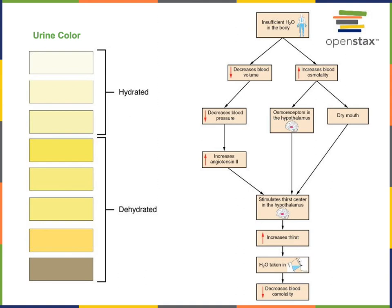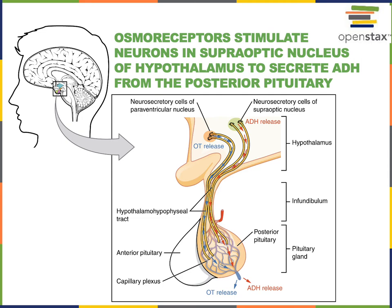These osmoreceptors in the hypothalamus will also act to stimulate the kidney to increase reabsorption of water, which causes the volume of urine to decrease, leading to a more concentrated small volume of urine. When you're dehydrated, the color of the urine becomes darker, and this is a result of the action of antidiuretic hormone. The neurosecretory cells in the supraoptic nucleus of the hypothalamus function as osmoreceptors and release antidiuretic hormone in response to high osmolarity. Antidiuretic hormone is released from the posterior pituitary gland and stimulates the kidney to increase water reabsorption.